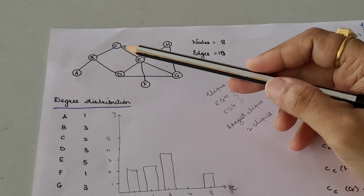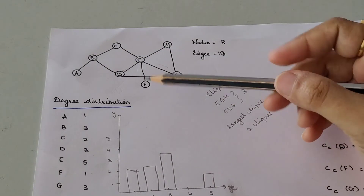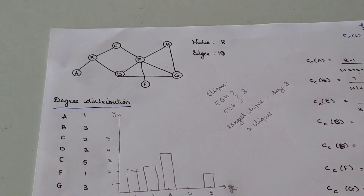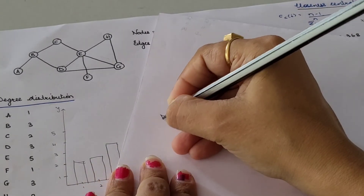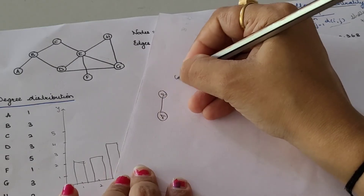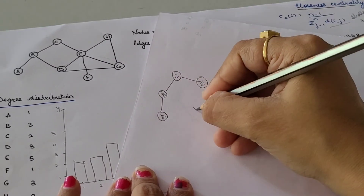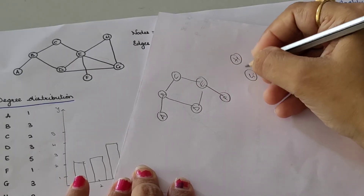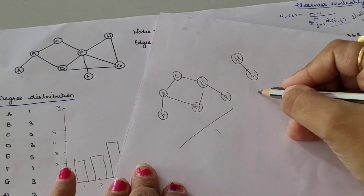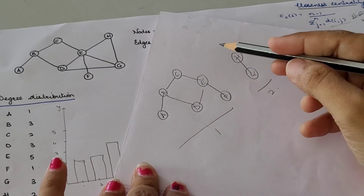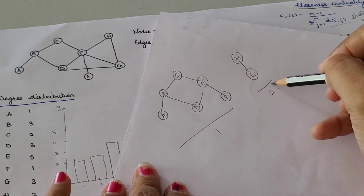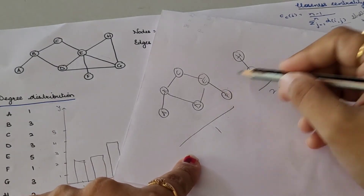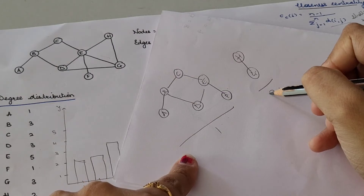In the given graph every node is connected with every other node — each and every node has a connected component, therefore this is a one-connected-component graph. Suppose a graph is split into two separate parts — A-B-C-E-D-F in one part and H and G in another — that would be the first and second components, making it a two-connected-component graph. Here there is a disconnection between the two, whereas in our graph every node is connected.